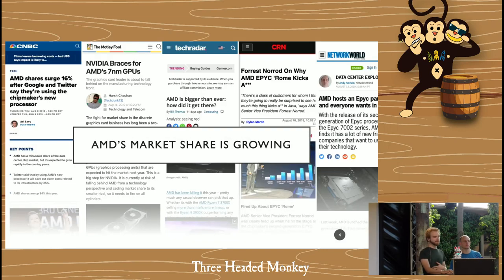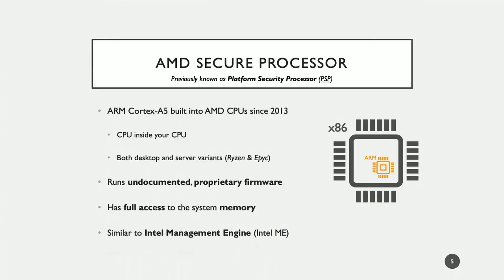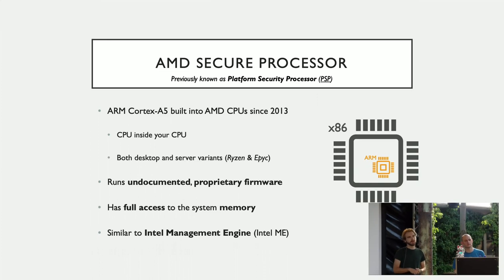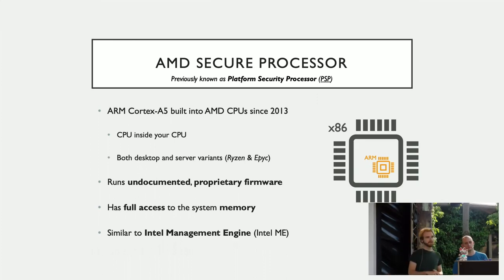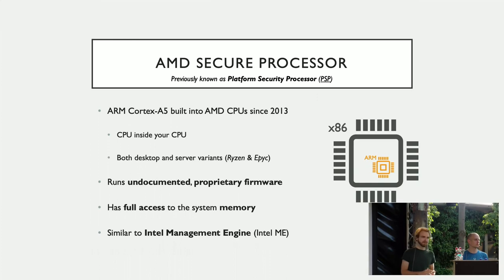Let's start off with some background. If you've read the news recently, you might have recognized that AMD's market share is growing massively, so it might be worth looking at the security of AMD CPUs more closely than ever. The AMD secure processor, which we're going to call PSP in this talk, is an ARM Cortex A5 built into your AMD CPU since 2013. It's a CPU inside your CPU, and it exists both on desktop as well as server variants — the current Ryzen and EPYC series. Unfortunately, the PSP runs undocumented and proprietary firmware. It has full access to the system memory, including your actual x86 processor. It's very similar to the Intel management engine that some of you might have heard of.